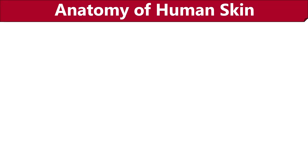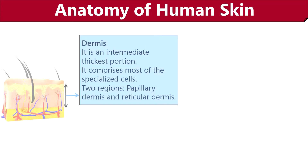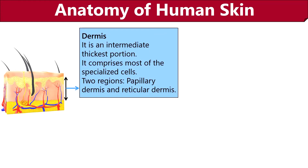Now we will look at another important layer of the skin: the dermis. Dermis is a thick layer found between the epidermis and hypodermis. It is divided into two regions — papillary dermis and reticular dermis. Papillary dermis contains loose connective tissues and appears in the form of epidermal ridges, whereas the reticular dermis contains dense connective tissues that constitute the portion between the papillary dermis and hypodermis.